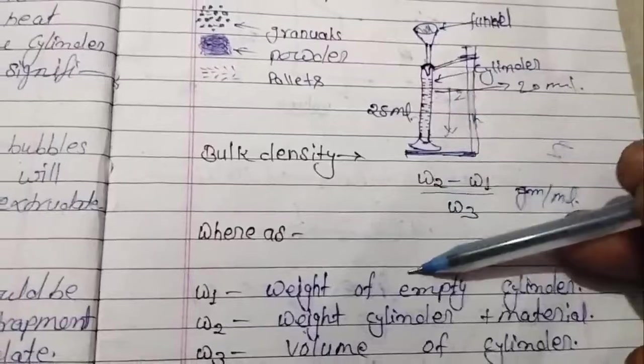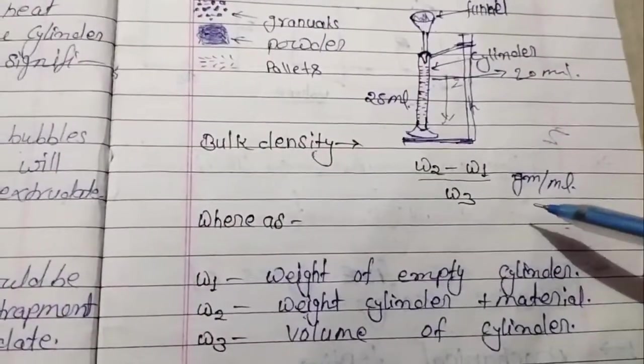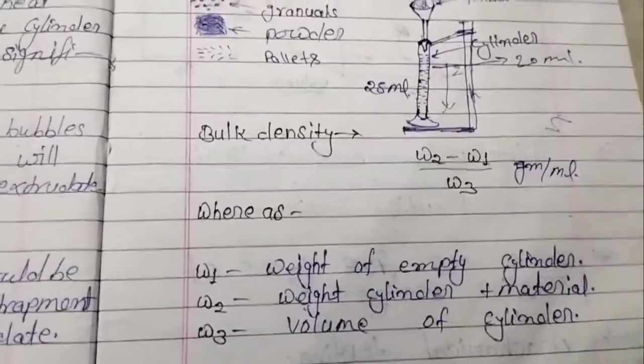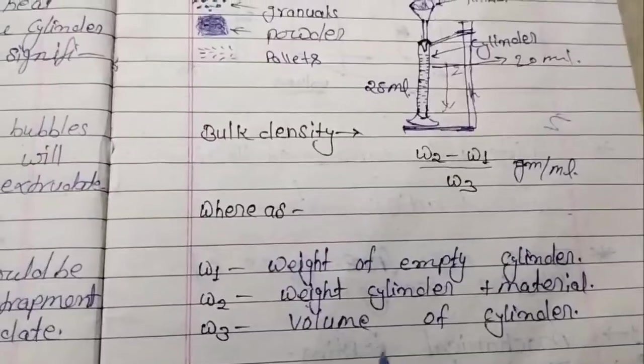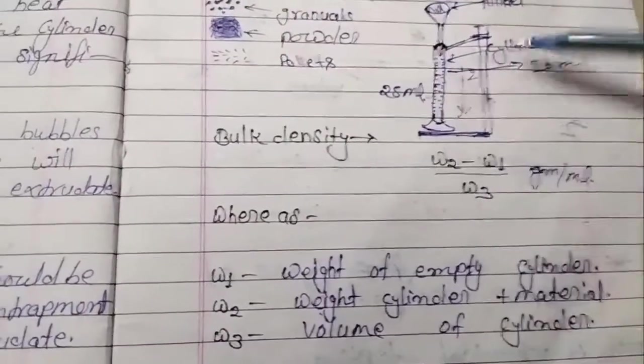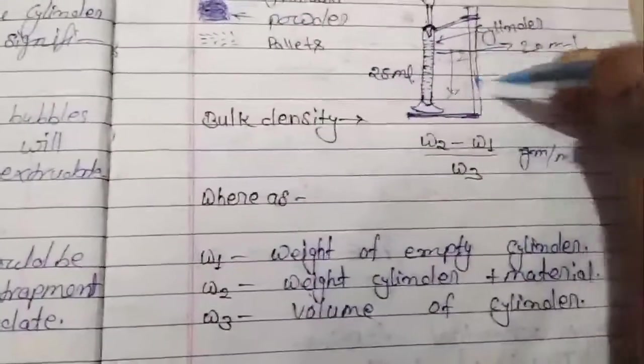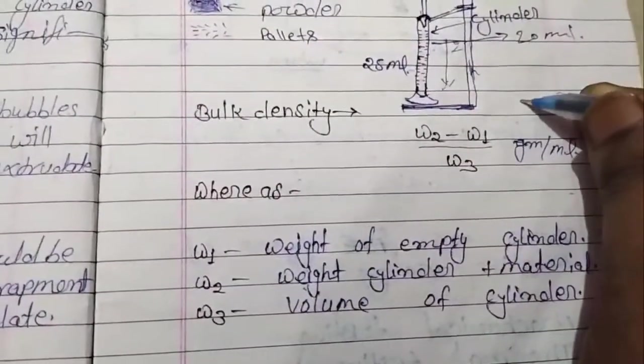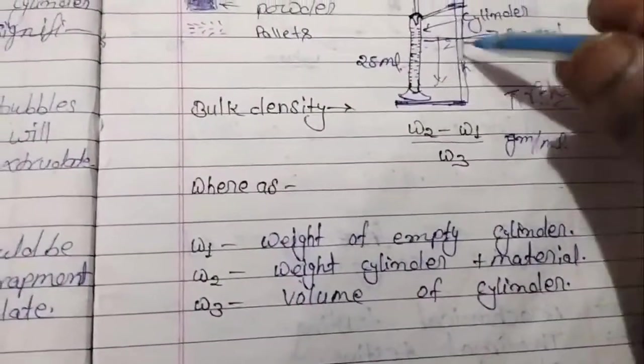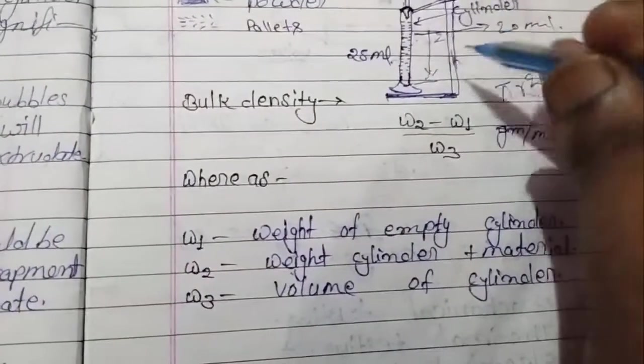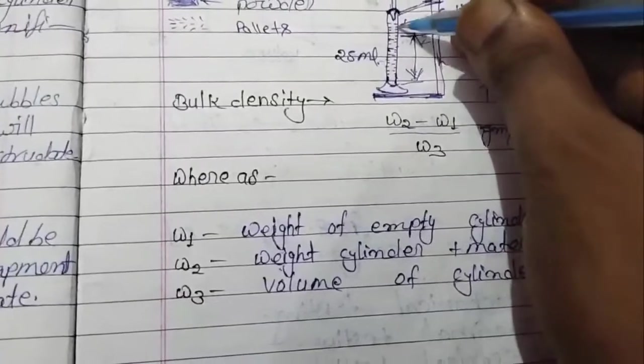The cylindrical shape volume is measured using the formula π r² h, where h is the height of the material filled inside the cylindrical shape.